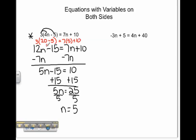20 minus 5 is 15 and 3 times 15 is 45. 7 times 5 is 35 plus 10 is also 45. Since they are equal, our solution of n equals 5 is correct.